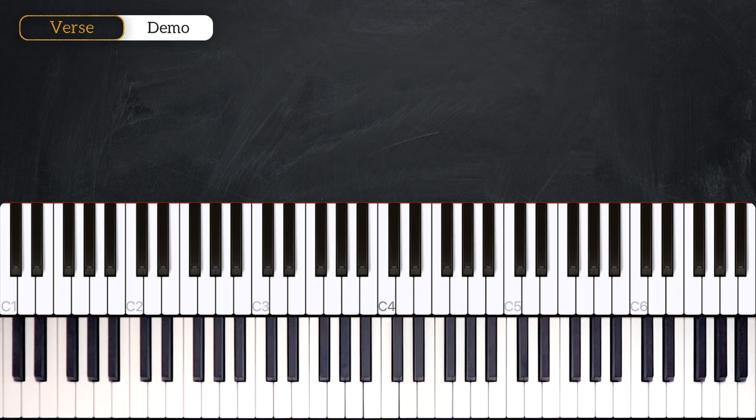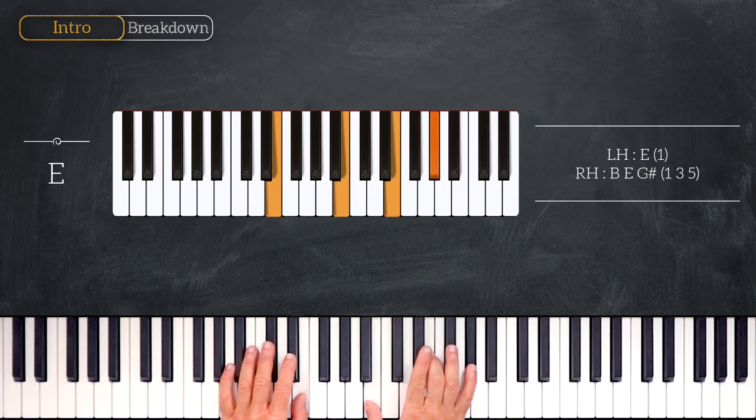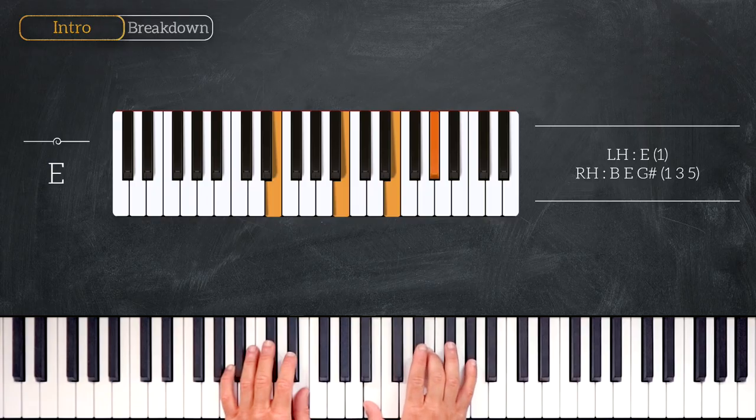Pretty simple. So here are the chords. We start by playing E major: E on the left hand, B E G sharp on the right.